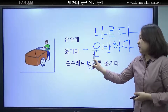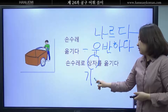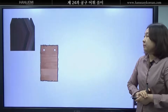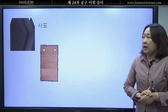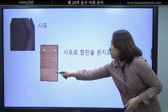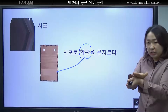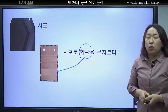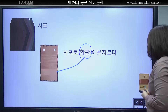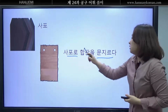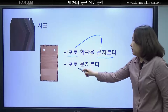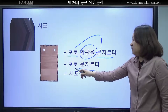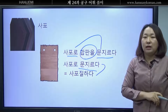자 손수레로 무엇을? 상자를, 기계를 옮기다, 운반하다, 나르다. 자 여러분 이것은 사포입니다. 자 사포로, 여러분 이것이 합판이에요. 사포로 합판을 문지르다. 사포로 문지르다와 같은 표현으로 사포질하다 라고 합니다. 사포로 합판을 문지르다, 사포질하다 입니다.